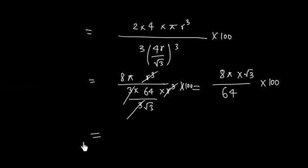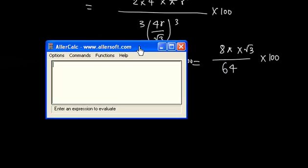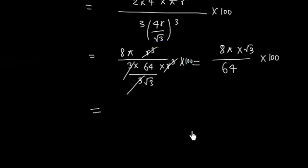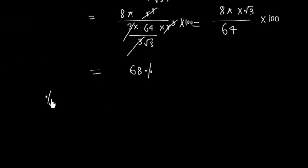Calculating the final value: we have 8 times π times root 3, all divided by 64. This works out to approximately 68%. So in a BCC lattice, the percentage packing fraction is 68%.